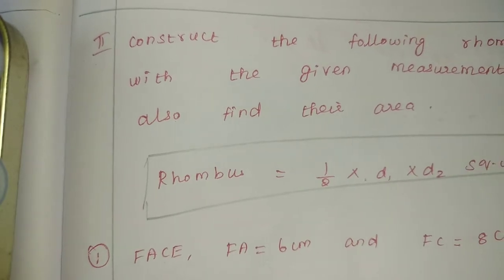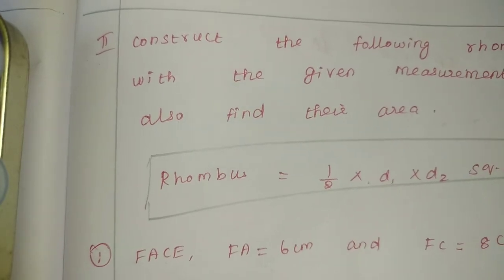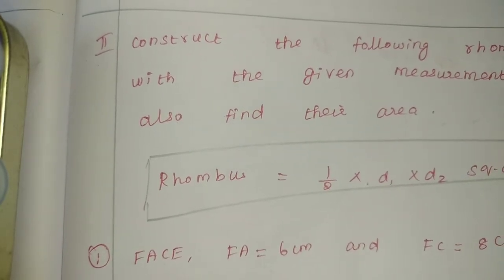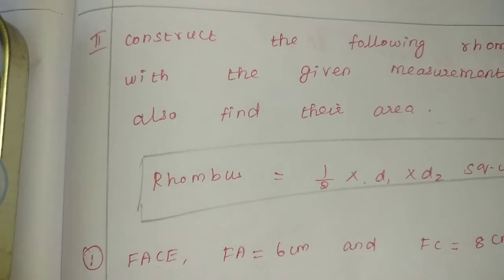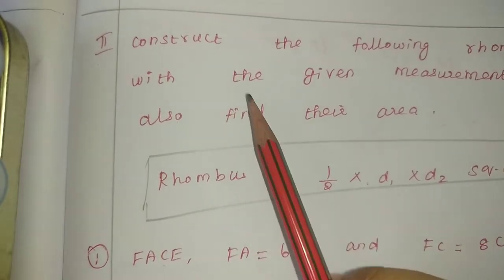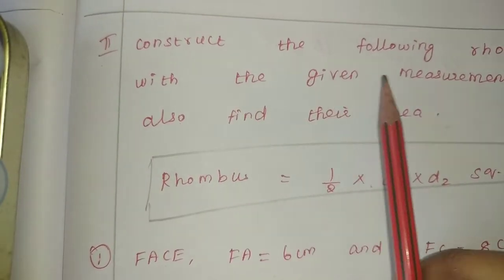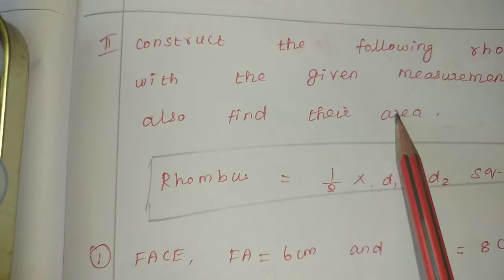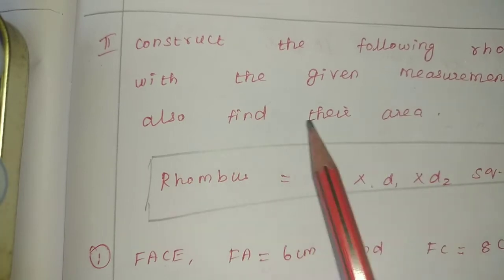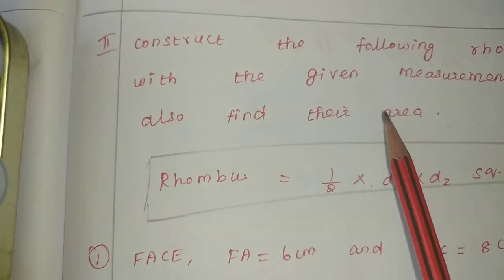Hello friends, I am Saranya. In this, we are going to look at 8th standard math, chapter 5, exercise 5.5, second sum: Construct the following rhombus with the given measurements. Also find the area.